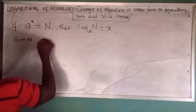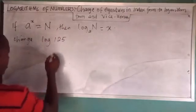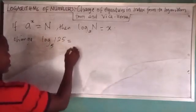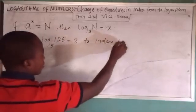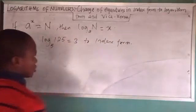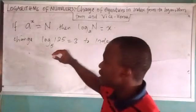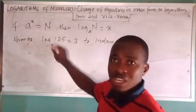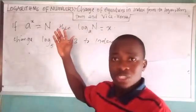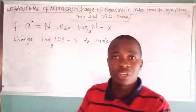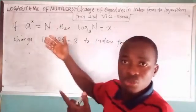Change log of 125 base 5 equals 3 to index form. What are you going to do? We are still comparing this given equation to any of these two equations. Which one is comparable? Which one can you compare this particular equation given to you with?